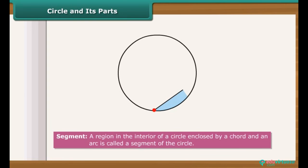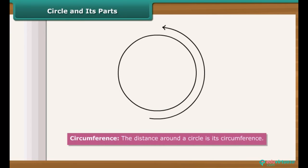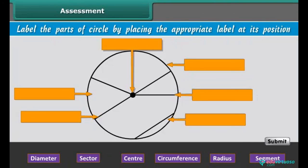Similarly, there is a portion bounded by chord and arc of circle which is called segment of the circle. The boundary of a circle is known as circumference of the circle. The distance around a circle is its circumference. Label the parts of circle by placing the appropriate label at its position.